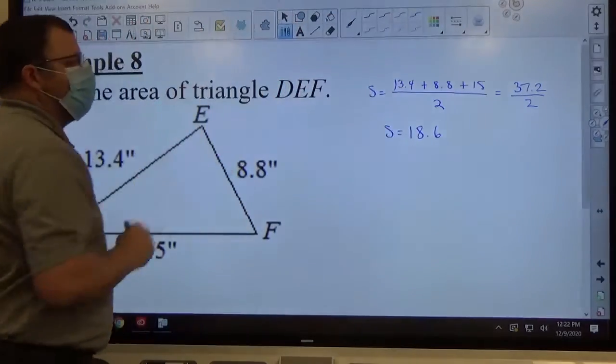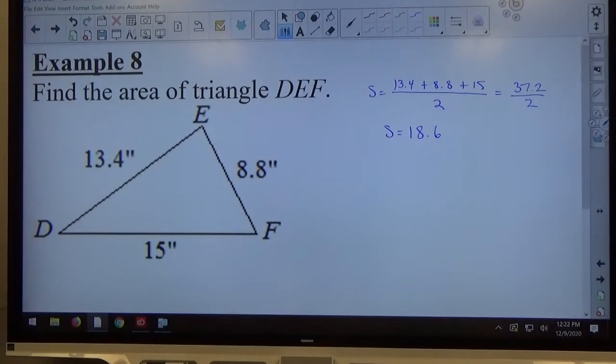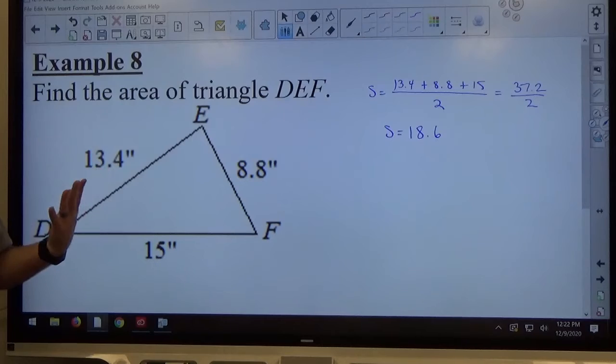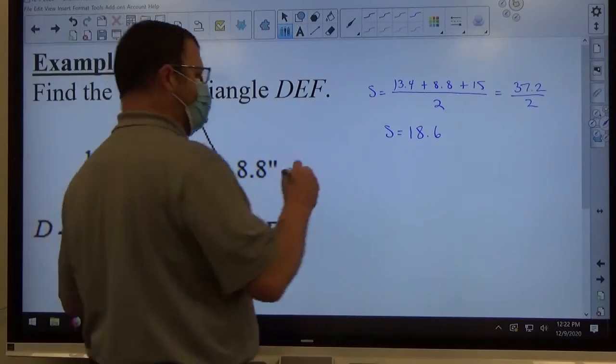Obviously 18.6 is not quite as pleasant as 12 was in the last problem, and the three sides were 6, 9, and 9. Here we've got 13.4, 8.8, and 15, so it's a little bit more unpleasant, but again, the formula works the same as it did before.